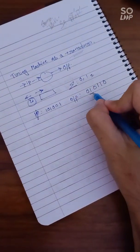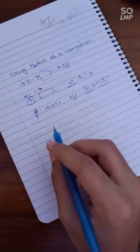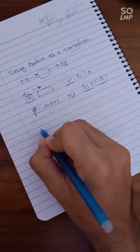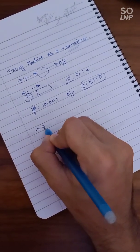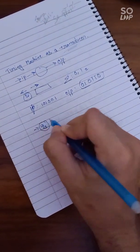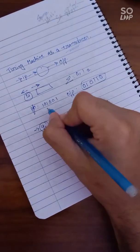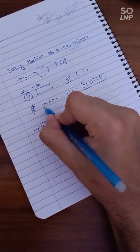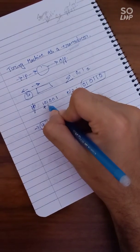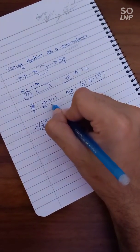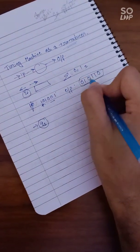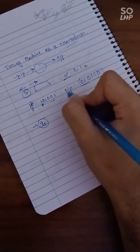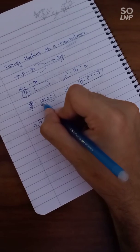That we know we have seen in Mealy and Moore machines, but now how does the Turing machine work to get the output like this? So what happens is in the start state qs, now important thing is the pointer is here when we are starting.